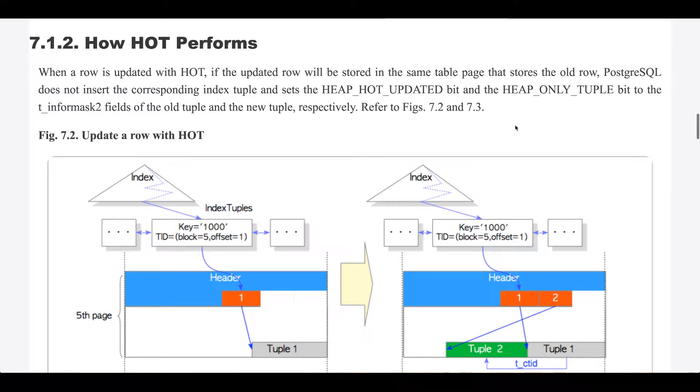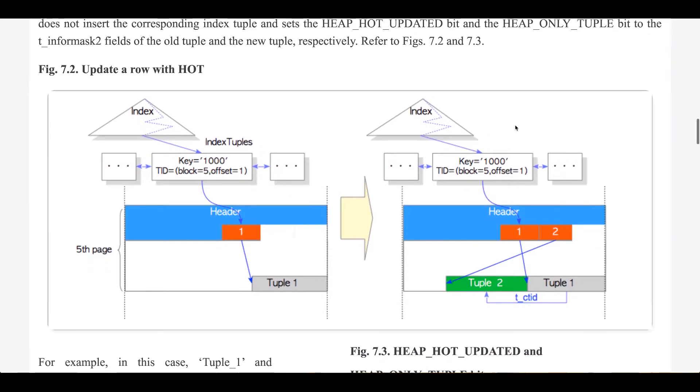Section 7.1.2: How HOT performs. When a row is updated with HOT, if the updated row will be stored in the same table page that stores the old row, Postgres does not insert the corresponding index tuple, and sets the heap hot updated bit and the heap-only tuple bit to the t_infomask2 fields of the old tuple and the new tuple, respectively. Refer to figures 7.2 and 7.3.